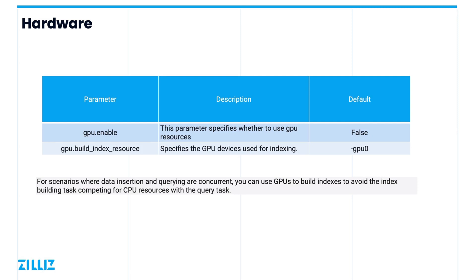Since the index building process is very computationally intensive, we generally recommend using GPUs to build indexes. Note that some indexes do not use GPU resources, as we mentioned earlier. Using GPUs can be enabled by installing the GPU version of Milvus and setting the parameter gpu.enable to true in the server.config.yaml file. In addition, the specific GPUs to be used can be assigned with the parameter gpu.buildIndexResource.